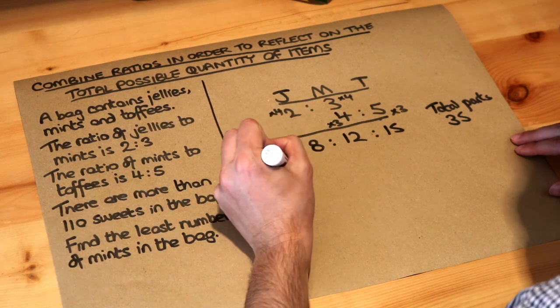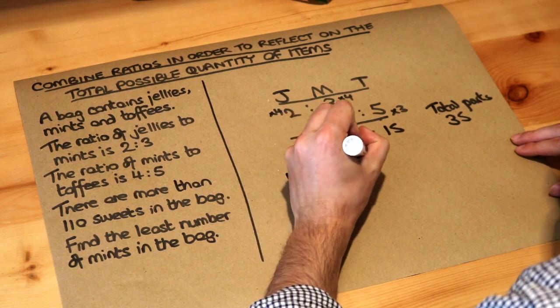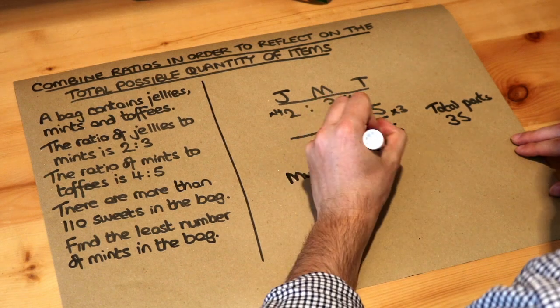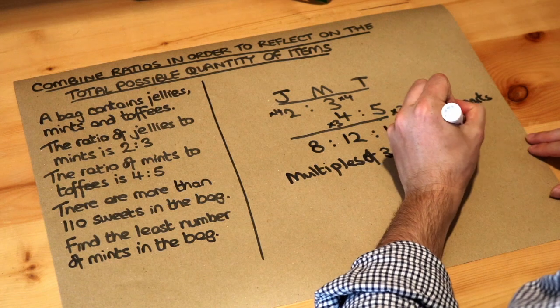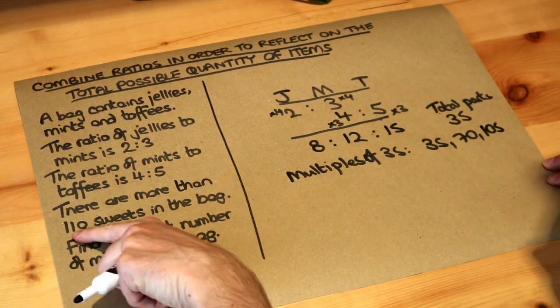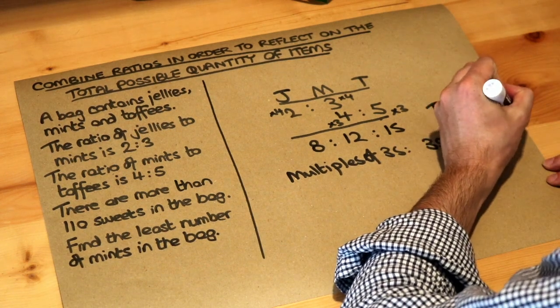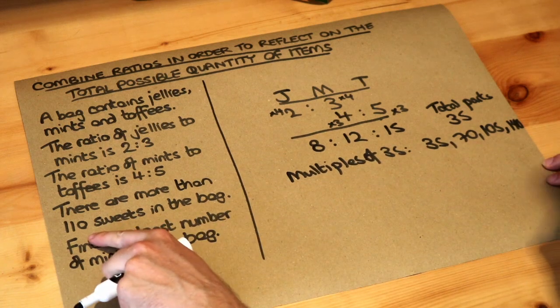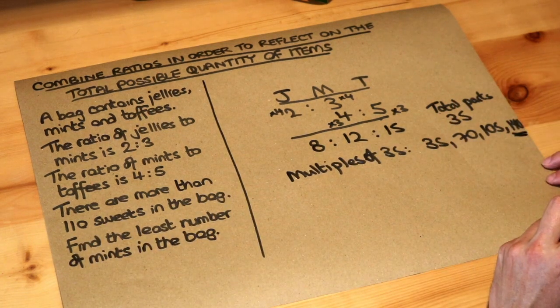Now we could just list multiples of 35 if we wanted to but there is a better way to do this. So multiples of 35 we've got 35. If we add 35 we get 70. If we add 35 we get 105. Is that more than 110 yet? No. The next multiple, 35 add 35 we get 140. Ah now that is more than 110 sweets. So we could have 140 sweets.